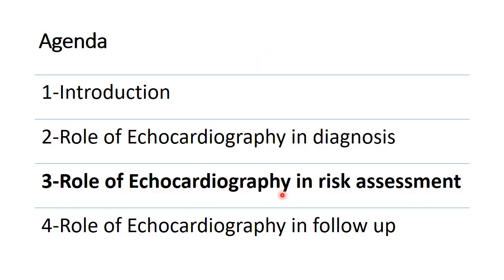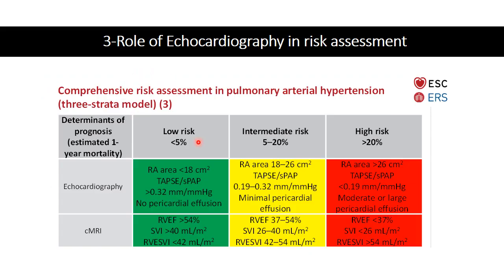Echocardiography plays a role in risk assessment through evaluation of right atrial size, TAPSE to systolic pulmonary artery pressure ratio, and assessment of pericardial effusion, allowing classification of patients with pulmonary hypertension into low, intermediate, and high risk. Cardiac MRI also has a role in risk assessment through evaluation of right ventricular ejection fraction, stroke volume index, and right ventricular end-systolic volume index.